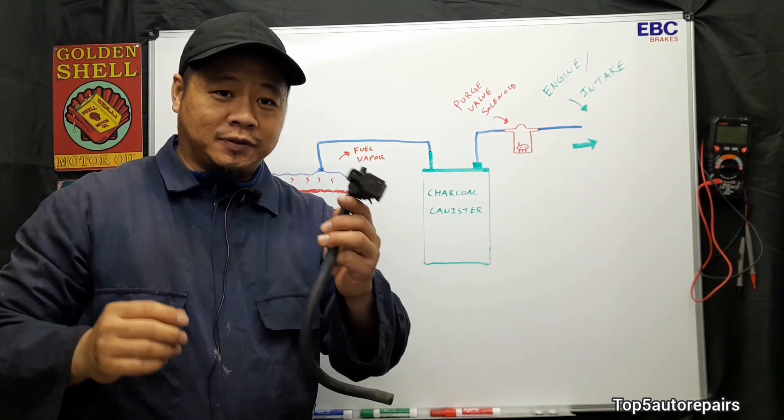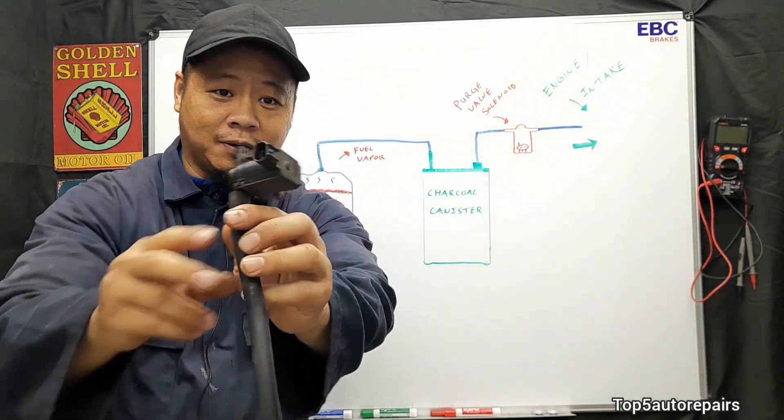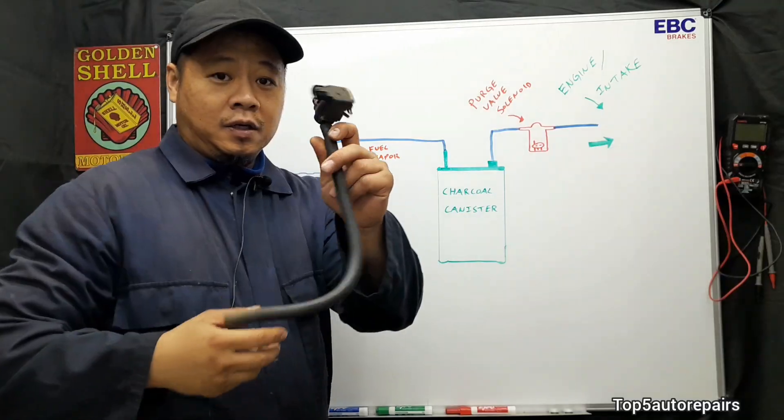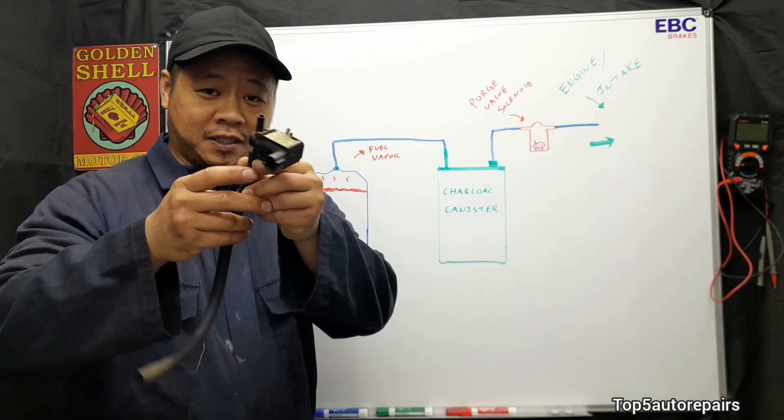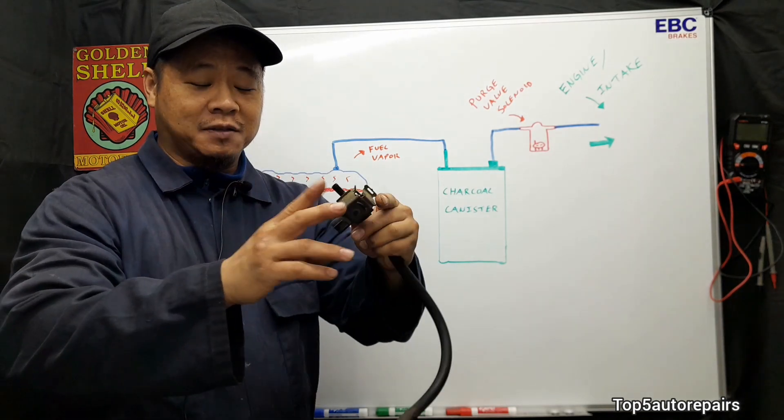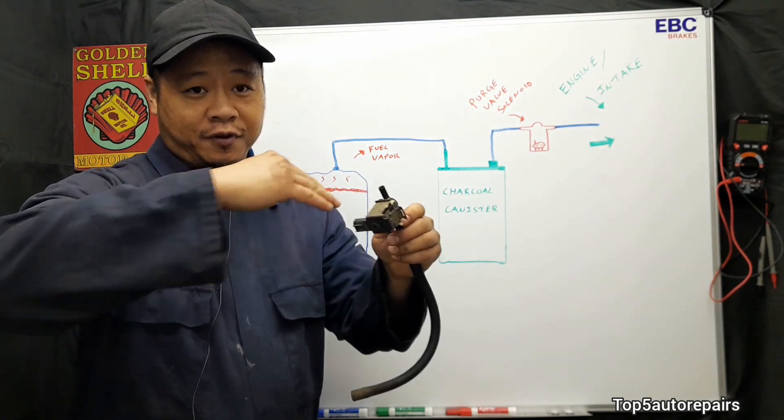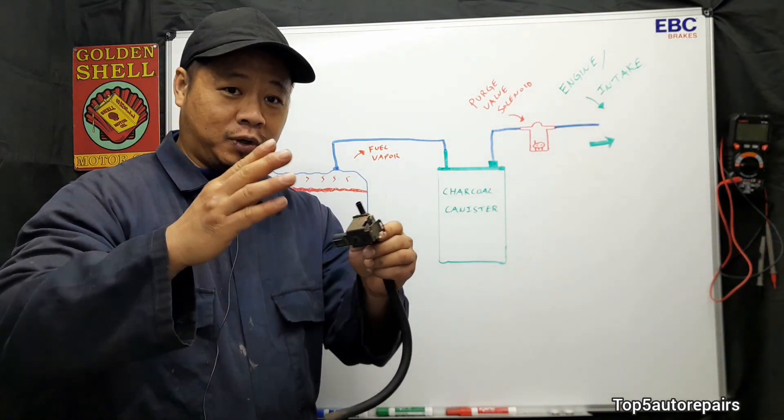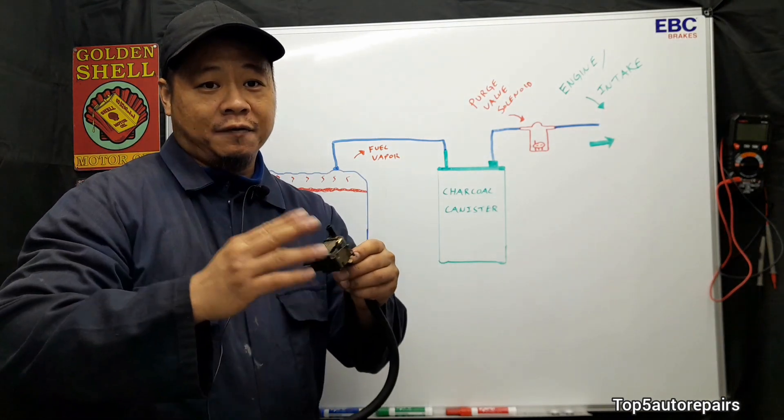Welcome back to Top 5 Auto Repairs and today's topic I'd like to discuss a bad purge valve solenoid. The purge valve solenoid is part of the EVAP system and it's mounted usually somewhere near the fuel rail, somewhere in the engine bay, and sometimes by the charcoal canister which may be mounted near the fuel tank.